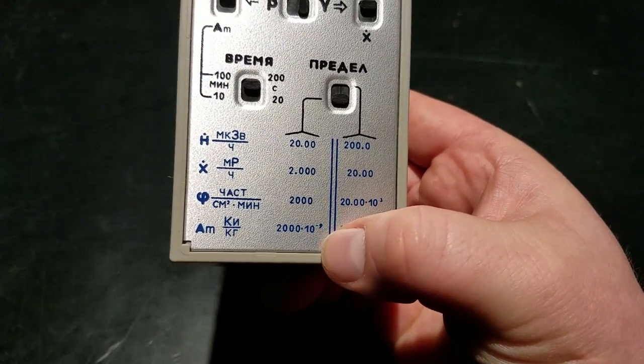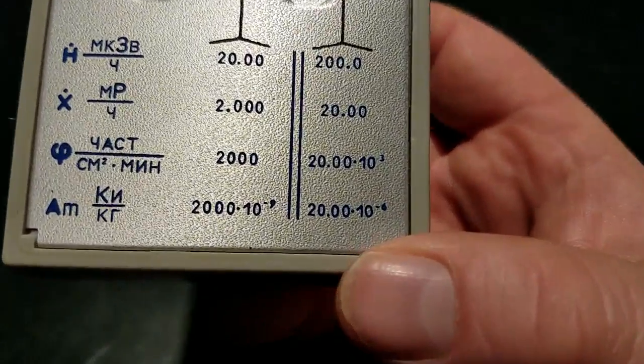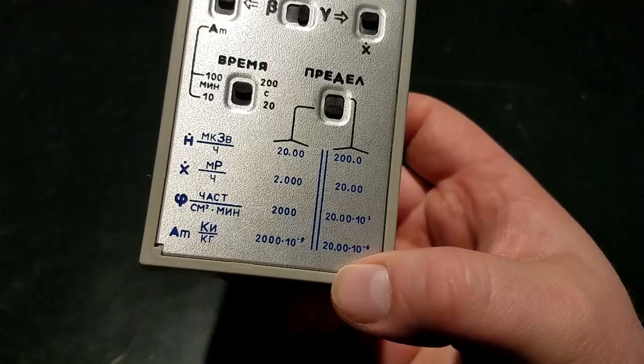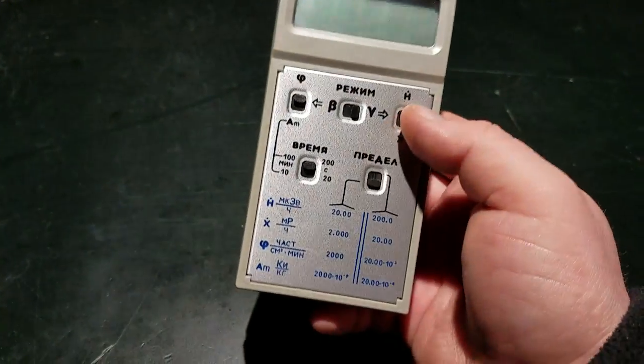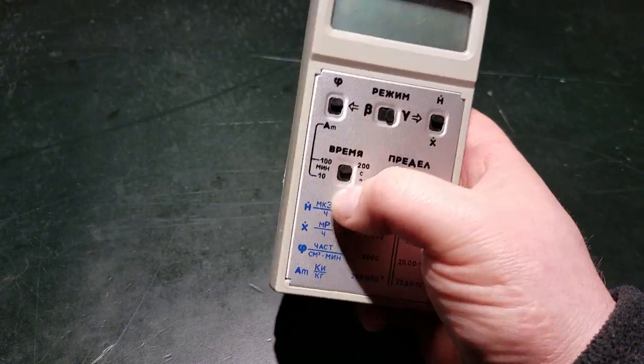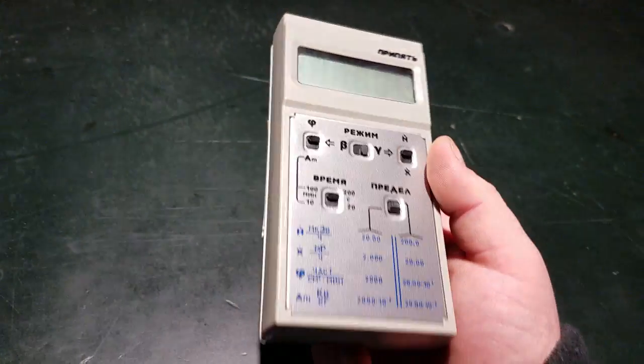The beta flux density you can either have 2,000 or 20,000. And then here you've got, I don't know if that's micro or picocuries per kilogram, but I don't screw with this too much because I don't know enough about how this works here.